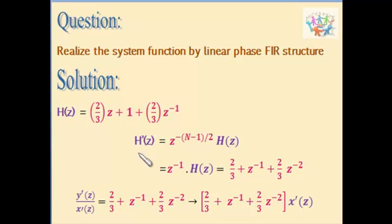Y dash of z by x dash of z, which equals H dash of z, is written as 2/3 plus z power minus 1 plus 2/3 into z power minus 2. So Y dash of z equals x dash of z into 2/3 plus z power minus 1 plus 2/3 into z power minus 2.